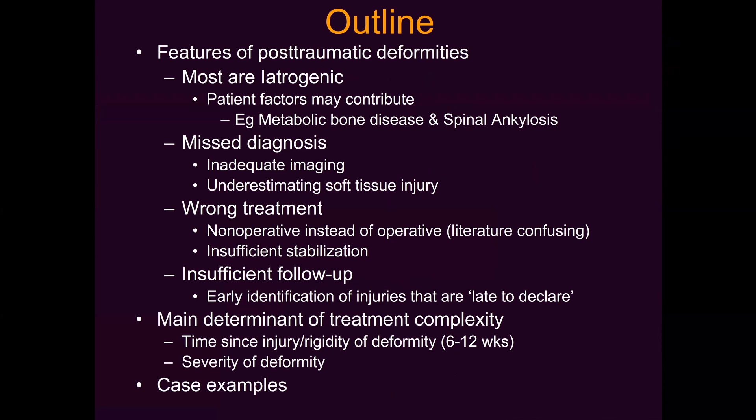This may overlap slightly with one of yesterday's talks, but it's important to remember that one of the features of post-traumatic deformity is that most of them are iatrogenic — whether due to misdiagnosis, inadequate appreciation of injury stability, or giving the wrong treatment in terms of either non-operative instead of operative, or just the wrong type of operative treatment. A lot of times these issues will present themselves reasonably quickly with good follow-up, and they're in a period where they're relatively easily correctable. Insufficient follow-up is really the huge connecting problem when it comes to having to address severe post-traumatic deformities.